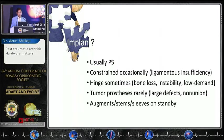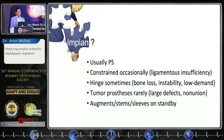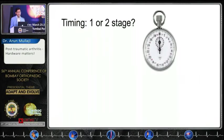Occasionally more constrained implants or hinges may be required — sometimes if there's bone loss or instability, or the patient is very low demand. Tumor prostheses are sometimes, very rarely, required if there's a large defect or massive non-union. Keep augments, stems, and sleeves on standby.